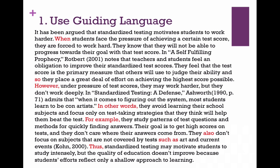Like every body paragraph, I start off with my what — what is it that I'm going to argue in this body paragraph? Here my focus is going to show that standardized testing motivates students to work harder. 'When' is signaling to my reader the next step I need to include, which is my how — how am I going to argue this? To do that, I'm focusing on the topic sentence: when students face the pressure of achieving a certain test score, they are forced to work hard. So this is my how.